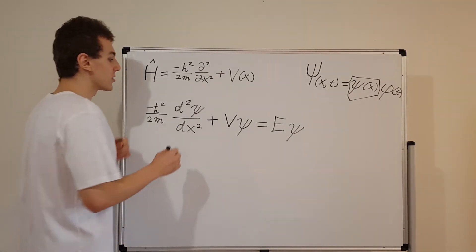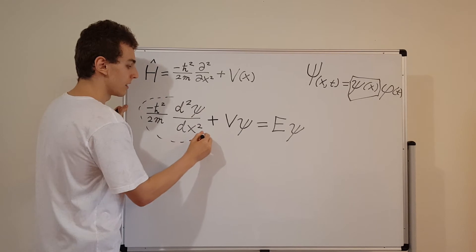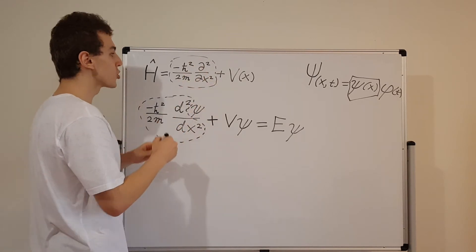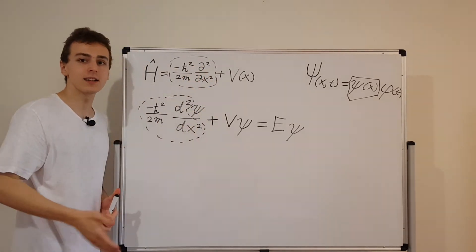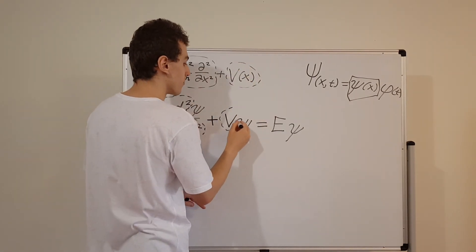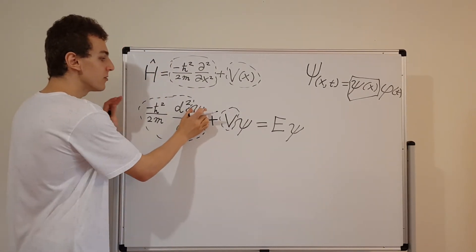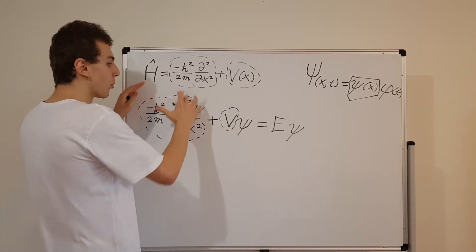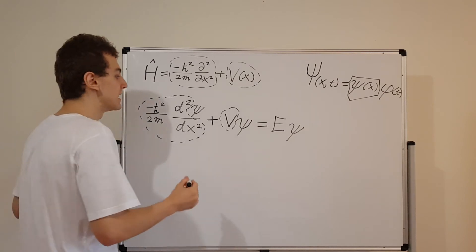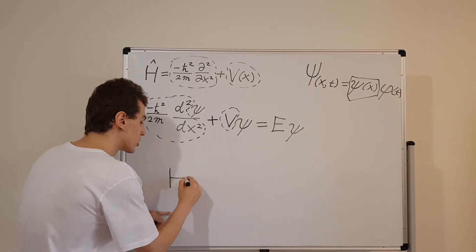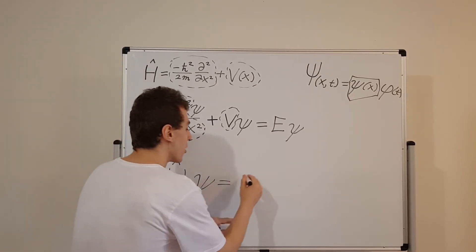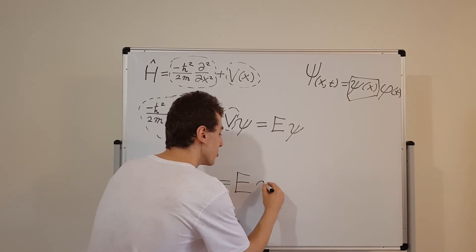So let's group things together. All of this stuff over here — the kinetic energy part — is the same as this part of the Hamiltonian operator. The only difference is the partial versus total derivative, which we discussed earlier. And the potential V(x) here matches the potential term in the Hamiltonian. So we can factor out psi and see that we have the Hamiltonian operator acting on psi. We can write this in condensed notation: H-hat acting on psi equals E times psi.